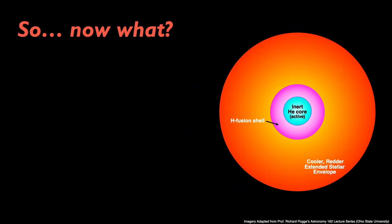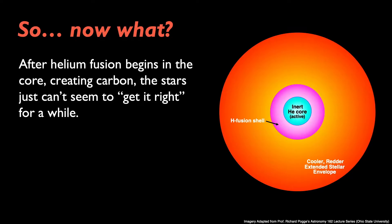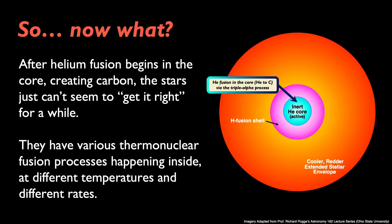After helium fusion begins in the core creating carbon, the stars just can't seem to get it right for quite a while. They have various thermonuclear fusion processes happening inside at different temperatures and different rates. You know, helium fusion in the core, hydrogen fusion in the shell surrounding the core, the usual.